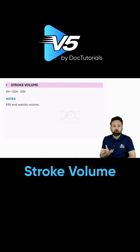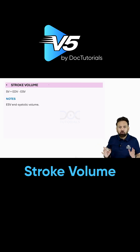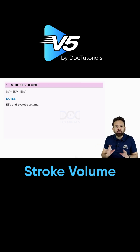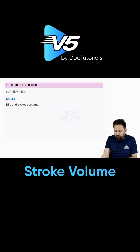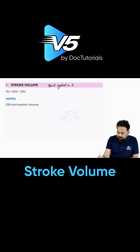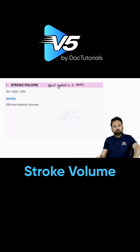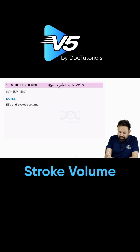Let us discuss number one: what is stroke volume? It is very simple, although it is conceptual. The amount of blood ejected in one stroke is called stroke volume, and simply we can say it is end diastolic volume minus end systolic volume.